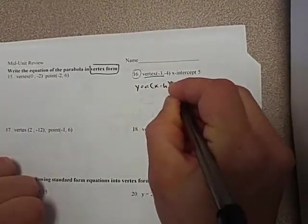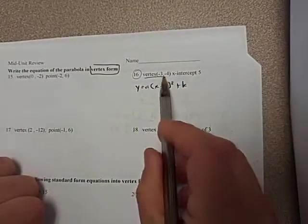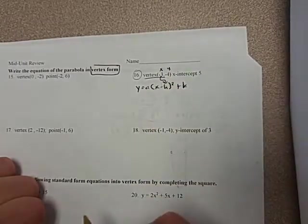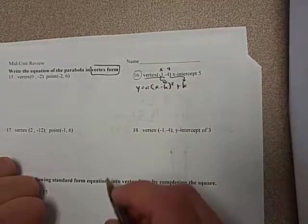So remember, it's going to look something like this. If we're given the vertex, remember this is x and this is y. So this x one goes here for h, and this y is going to go here for k.